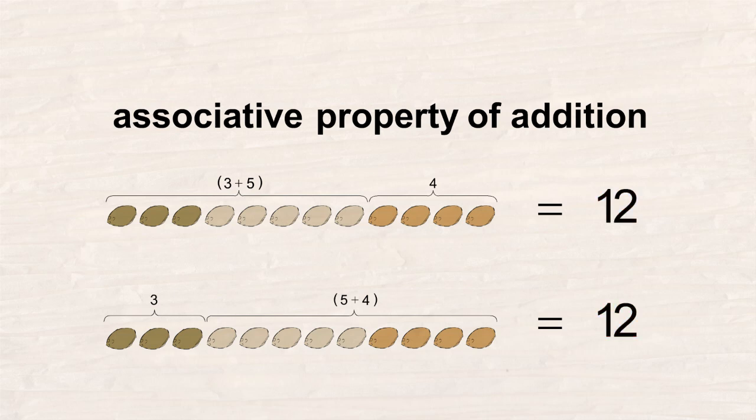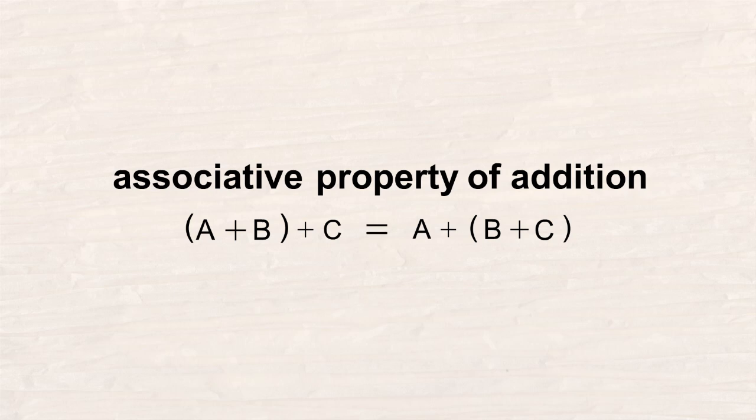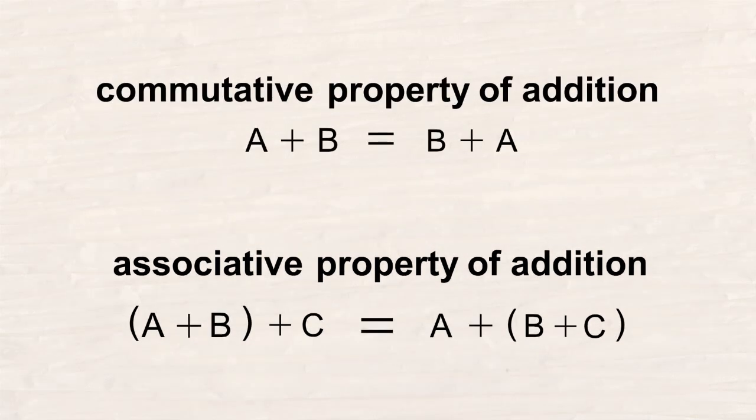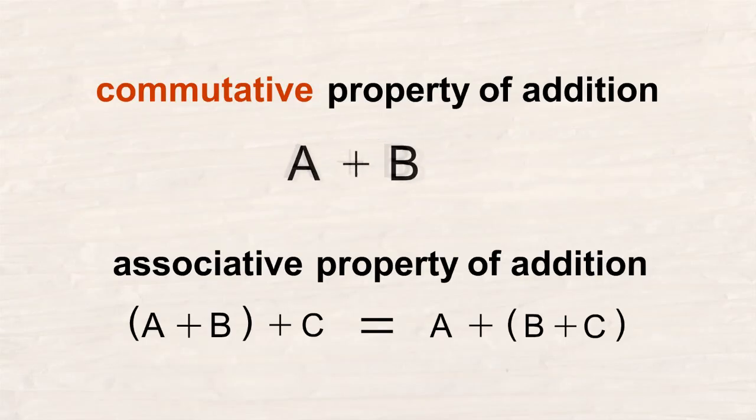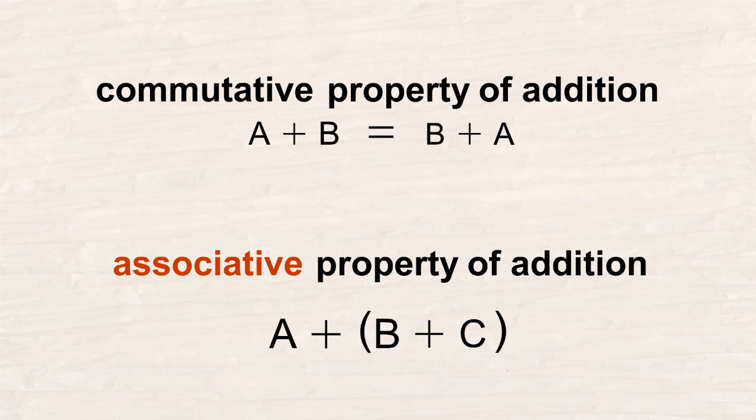If we call these quantities A, B, and C, then we can write this property in a more general way. The commutative property of addition involves moving around the numbers to be added, whereas the associative property of addition involves grouping them differently.